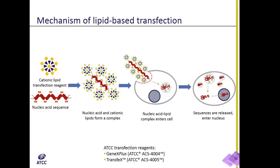In lipid transfection, it's simply based on the concept of opposites attract. The nucleic acid has a net negative charge. The cationic lipid micelles — the transfection reagent — have a positive charge. The nucleic acid and lipids are allowed to form a complex, which now has a net positive charge because of the cationic lipid micelles coating all surfaces of the DNA or RNA molecules, thus giving it a net positive charge.